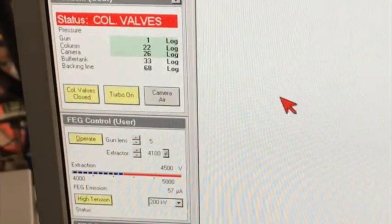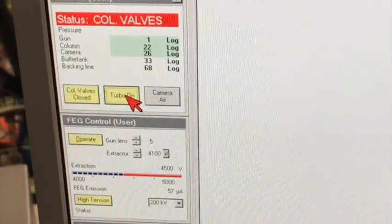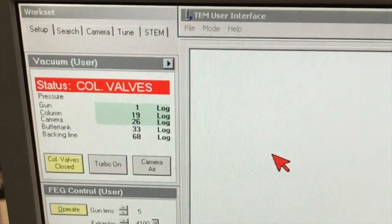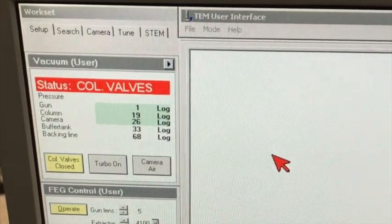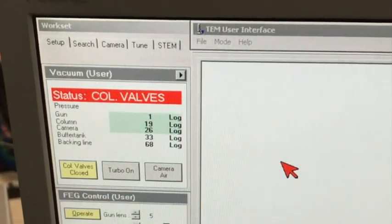After fully inserting the specimen holder, we can turn the turbo off. The vacuum of the column should be below 15 before we open the gun valve. Right now, this is 19. While we are waiting for the vacuum, let's have a quick look at the instrument.